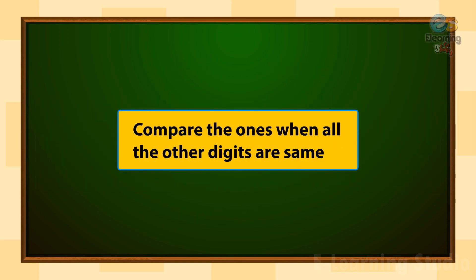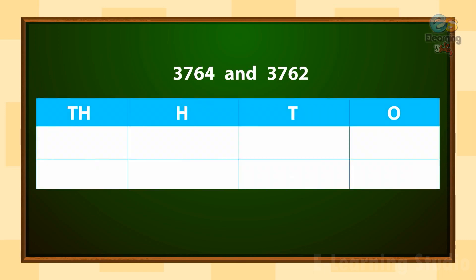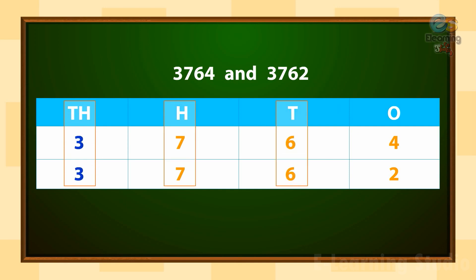Now children, compare the ones place when all the other digits are the same. Here in this example, you can see the numbers 3,764 and 3,762. Again, we arrange the numbers in their place value. The digits in the thousands, hundreds, and tens place are the same. So if the digits in the thousands, hundreds, and tens place are equal, we compare the digits in the ones place. We can see in the ones place, 4 is greater than 2. So 3,764 is greater than 3,762.